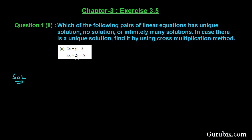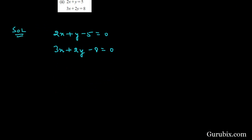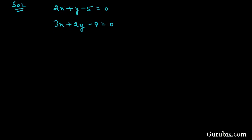First, we shall write the pair of linear equations in standard form: 2x + y - 5 = 0 and 3x + 2y - 8 = 0. Now we shall find A1 over A2, which is 2 over 3, and B1 over B2, which is 1 over 2.